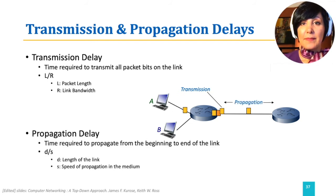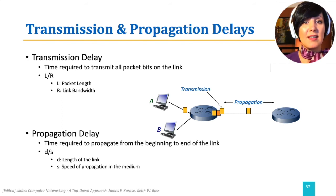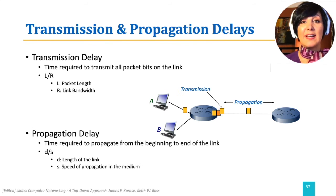Propagation delay is the time required to propagate a bit from the beginning to the end of the link. Note that propagation depends on the medium of the link. For example, in fiber optics, since bits are transferred by light signals, propagation delay is calculated based on the speed of light and the length of the link that the signal has to travel.